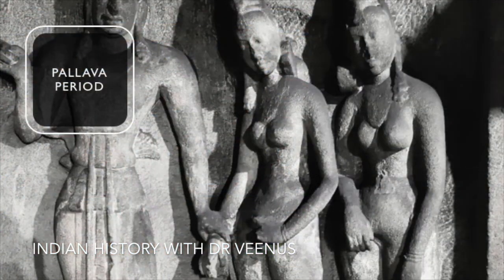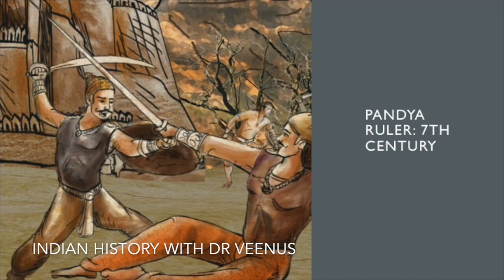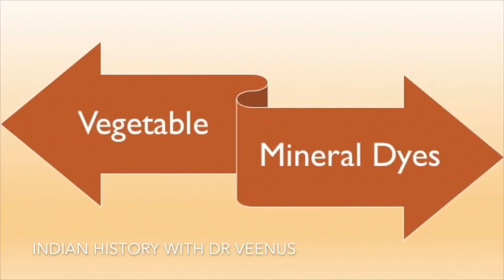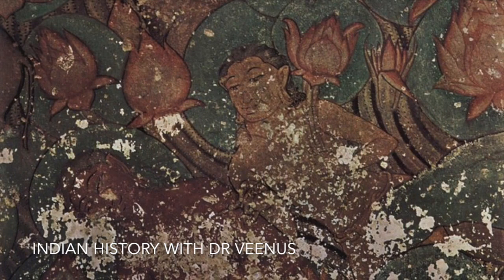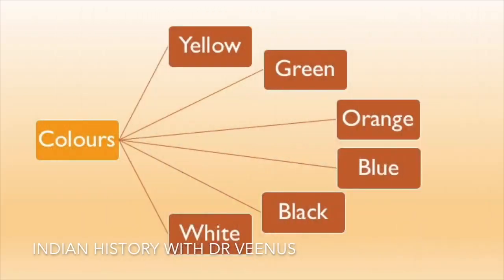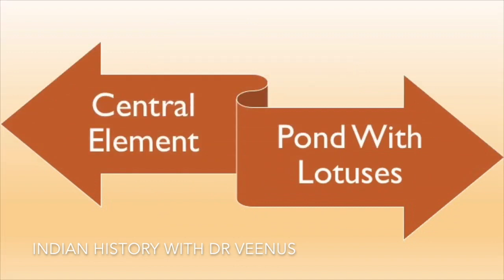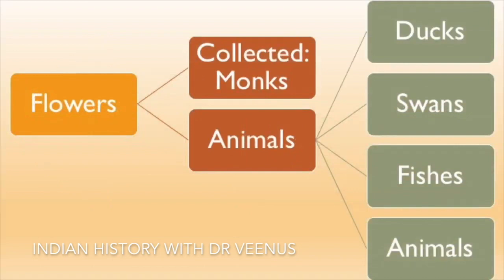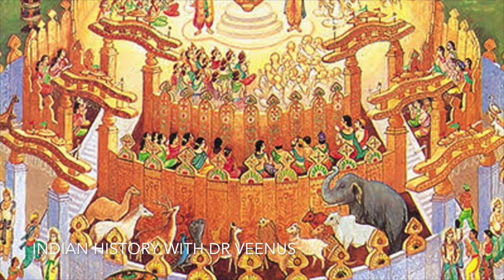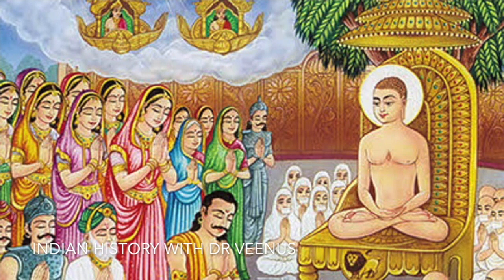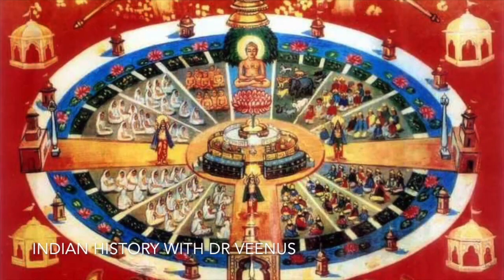Some scholars attribute Sittanivasal to the Pallava period when King Mahendravarman I excavated the temple; others attribute renovation to a Pandya ruler in the 7th century. The medium was vegetable and mineral dyes on thin wet lime plaster. Common colors include yellow, green, orange, blue, black and white. The central element is a pond with lotuses, monks collecting flowers, ducks, swans, fishes and animals. A prominent scene shows Samavsharan — a special audience hall where Tirthankaras delivered sermons after attaining Keval Gyan — with bulls, elephants, apsaras and gods gathered.